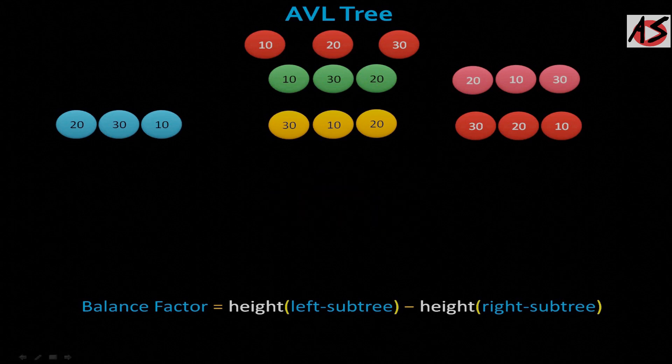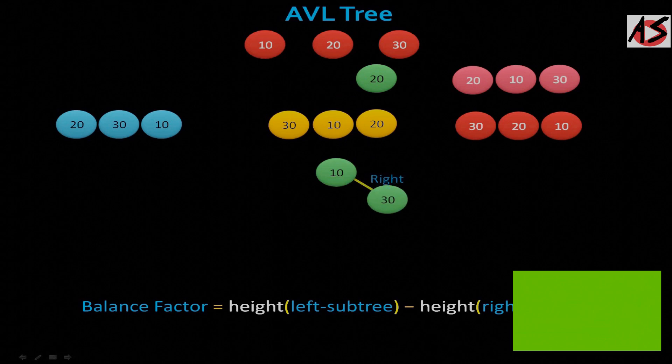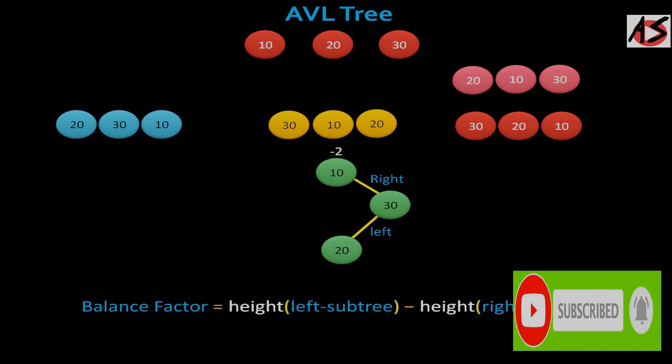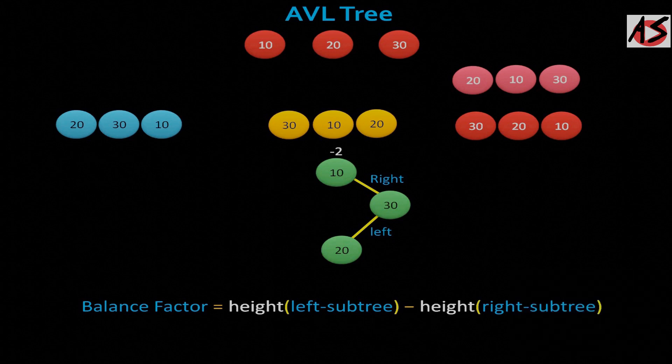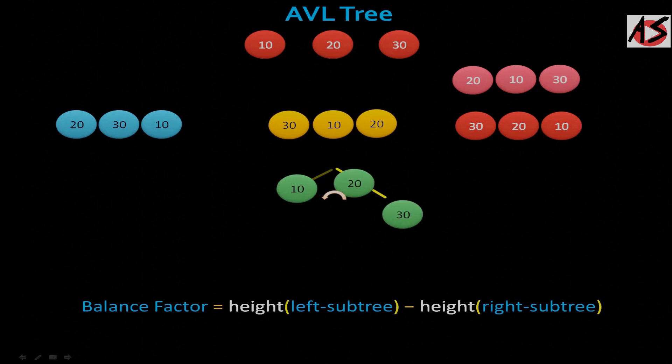Now for the second order, that is 10, 30, and 20 are inserted in this way. And it is right left case. Here also you can see the root is unbalanced. So you have to rotate node 30 to the right and 10 to the left to make the AVL tree.